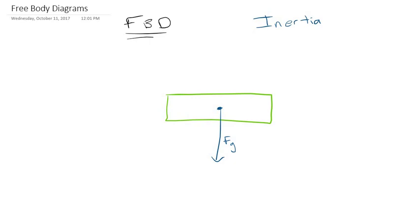But if we did not want this object to accelerate anymore, we could perhaps draw a table underneath it. So now we have a table underneath our object, so it can no longer accelerate in the downward direction. But it still has the same force of gravity acting on it, so how can we show with our force vectors that it is no longer going to accelerate according to Newton's first law?